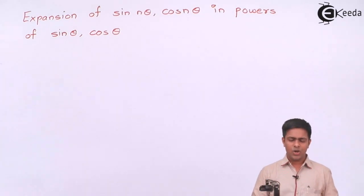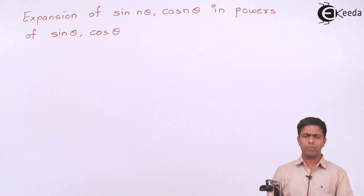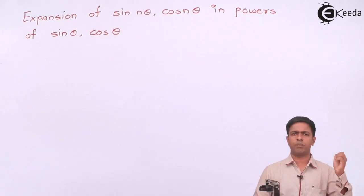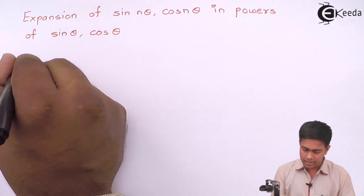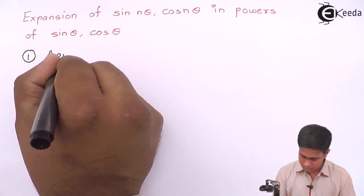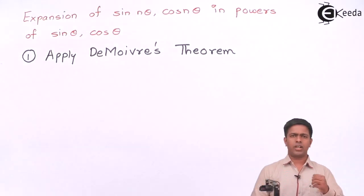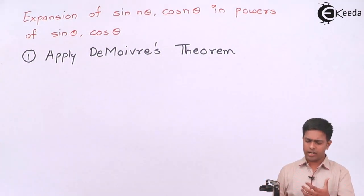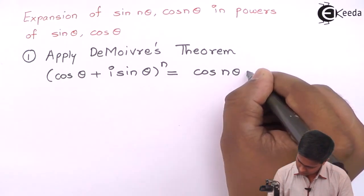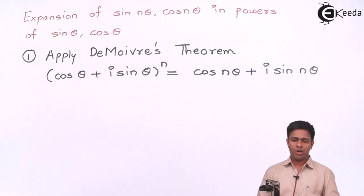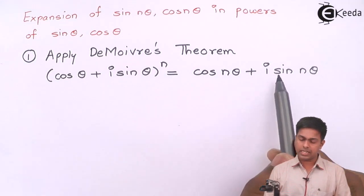So let's learn it step by step. Step number one: whenever you want to expand a multiple of θ into powers of trigonometric functions, apply De Moivre's theorem. We all know De Moivre's theorem — by it we get cos(nθ) + i·sin(nθ), which gives us the multiple of θ.